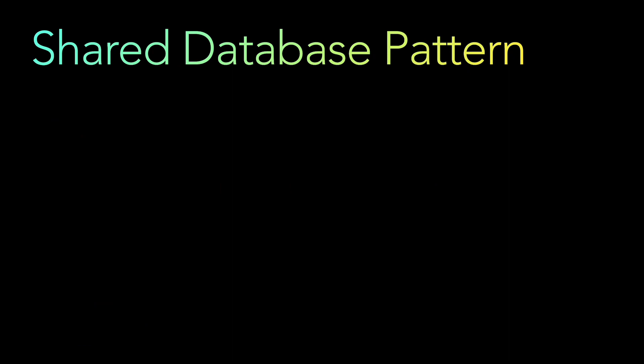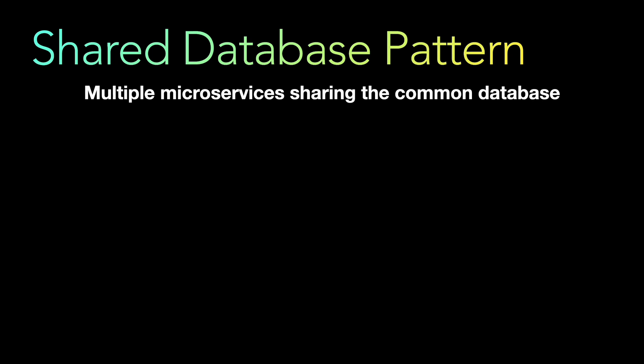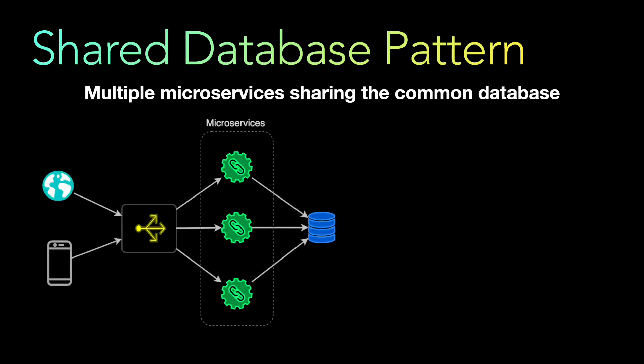The first pattern is called the shared database pattern. Like the name suggests, it's multiple microservices sharing a common database. The architecture shows clients calling multiple microservices via the API gateway, but different microservices are writing and reading from the same database.